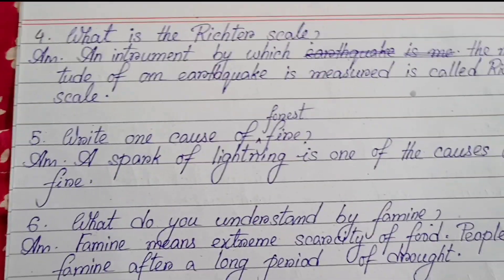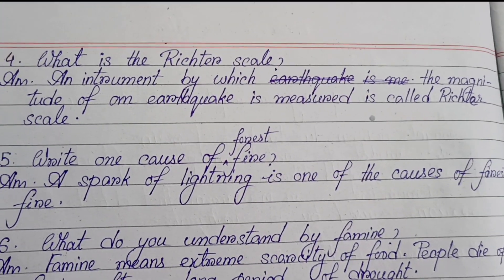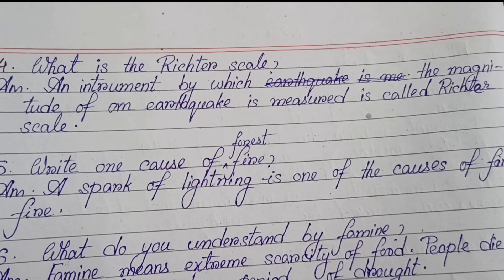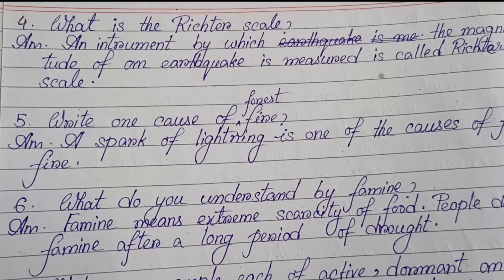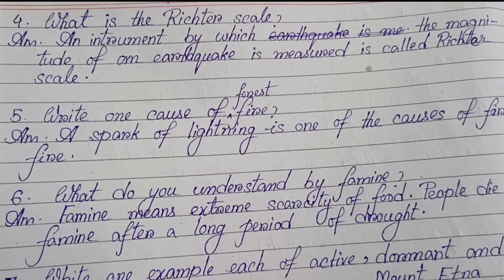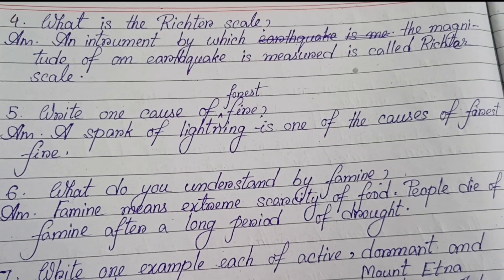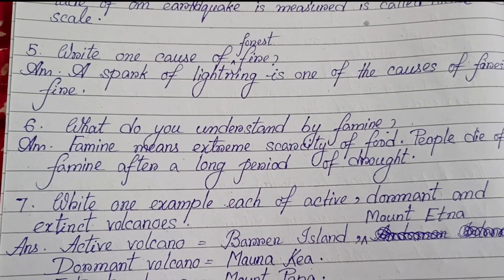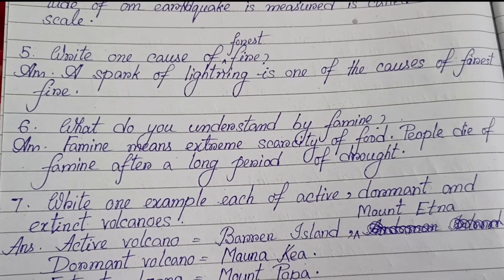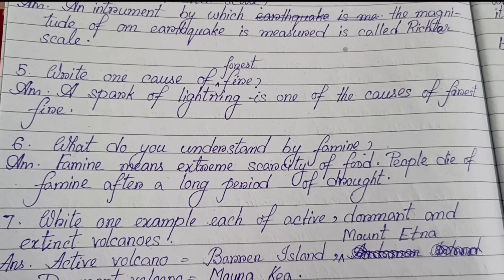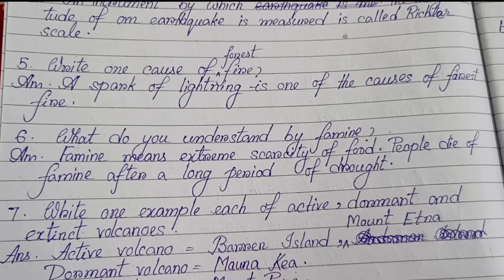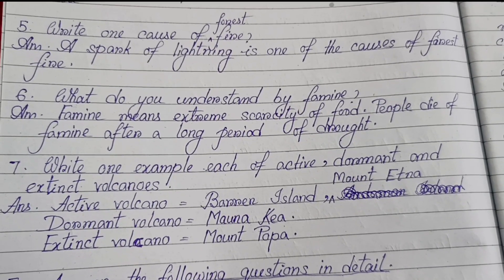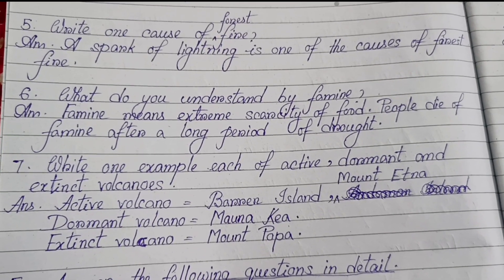Number four: What is the Richter scale? An instrument by which the magnitude of an earthquake is measured is called the Richter scale. Number five: Write one cause of forest fire. A spark of lightning is one of the causes of forest fire. Number six: What do you understand by famine? Famine means extreme scarcity of food; people die of famine after a long period of drought. Number seven: Write one example each of active, dormant and extinct volcanoes.